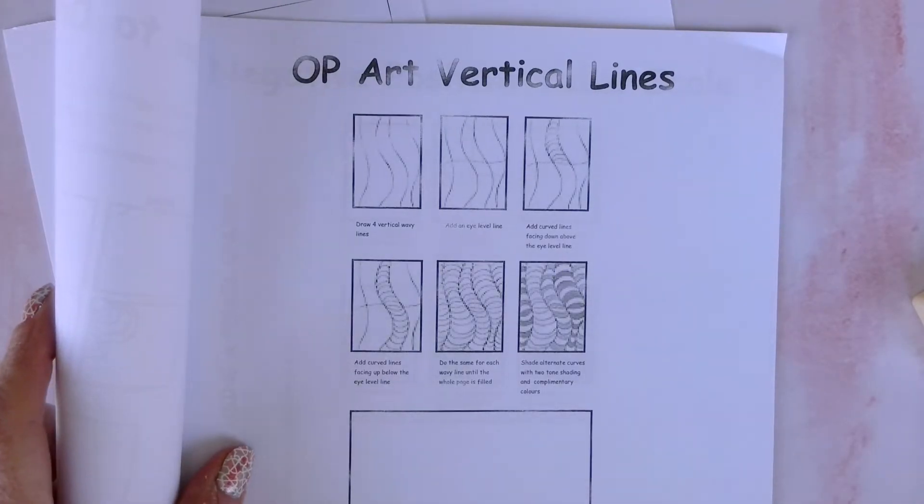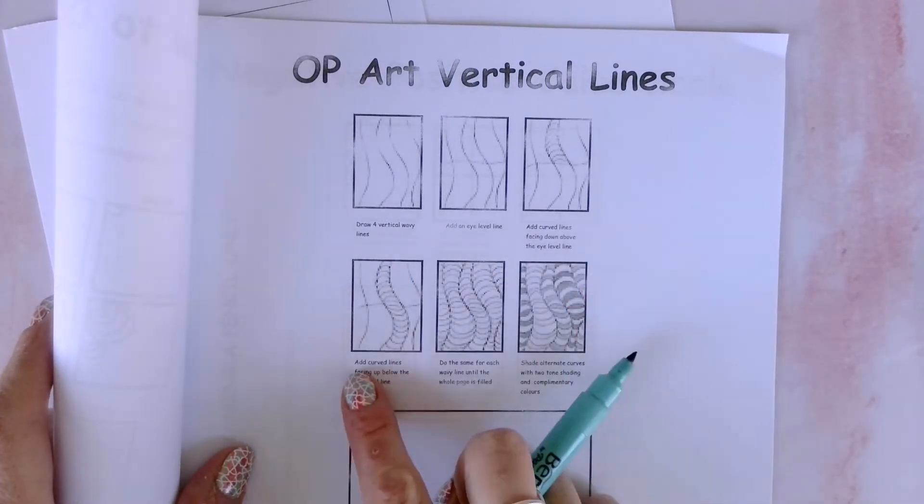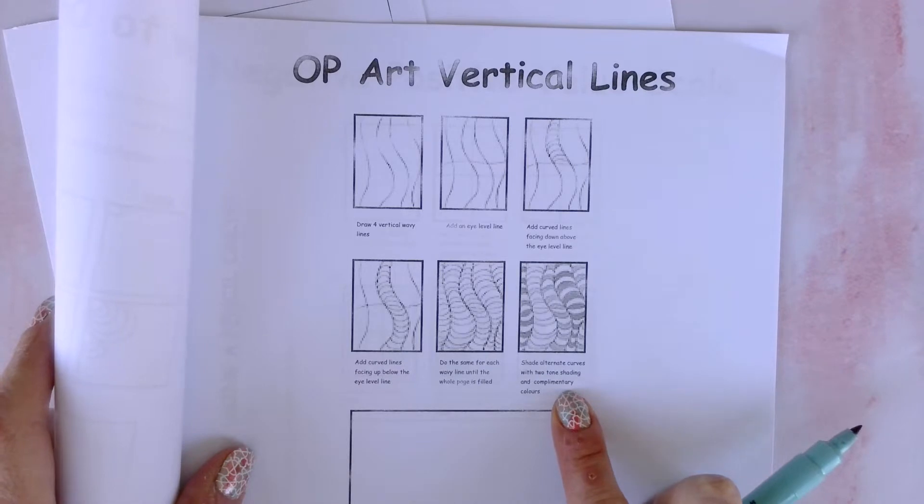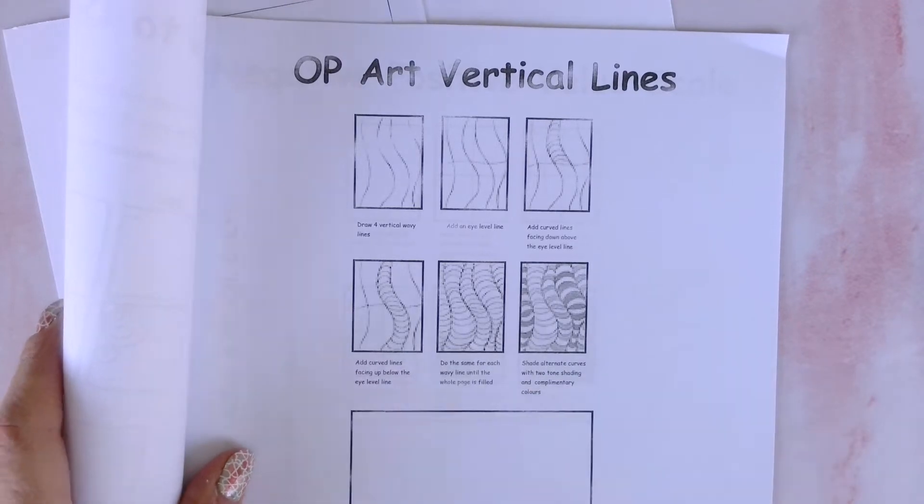I'm going to show you how to do your Op Art Lesson 3, Op Art Vertical Lines. Now with this task, as always, it is really important that you read the instructions. So I'll go through how to do this with you, and then I'll speed up and show you how I get on with the task.